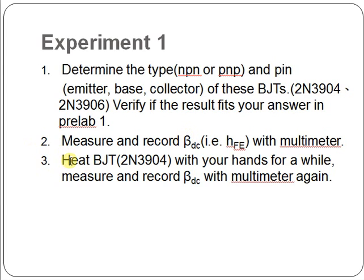Then you have to heat the BJT with your hands for a while. This will let you understand that the temperature will affect the beta. So measure and record the data with the multimeter.